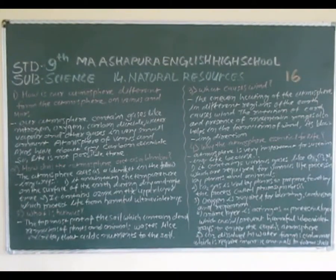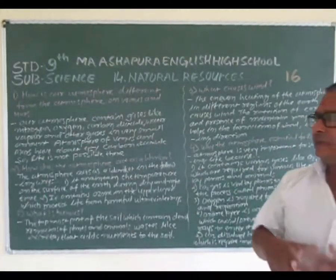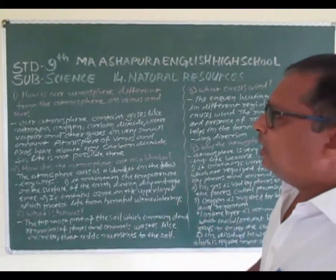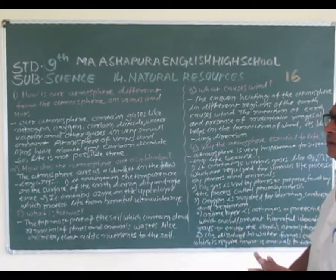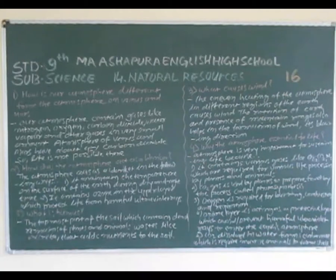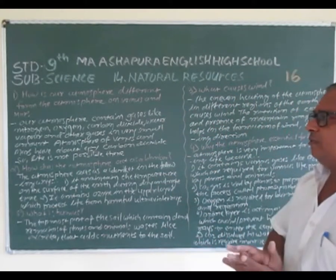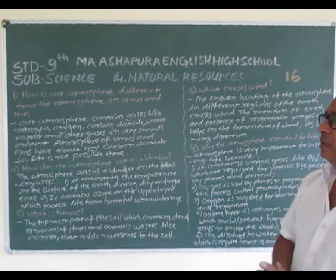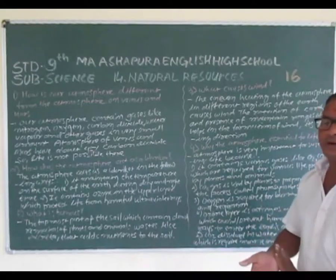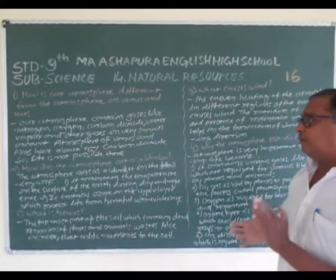First question: How is our atmosphere different from the atmosphere of Venus and Mars? Our atmosphere contains gases like nitrogen, oxygen, carbon dioxide, water vapour and other gases in a very small amount. Venus and Mars have about 95% carbon dioxide.